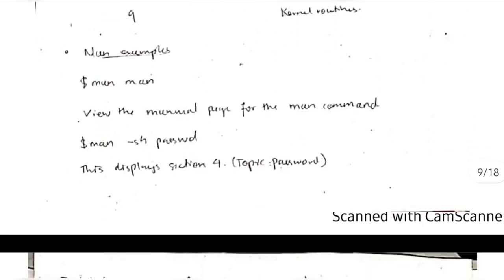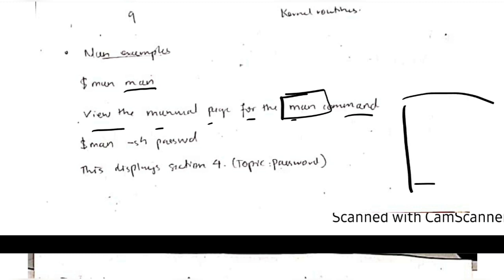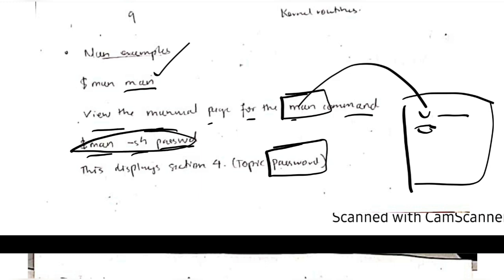For example, if I write 'man man', it will view the manual page for the man command itself — man is also a command, so its definition is present in the manual. 'Man 5 passwd' — that section has a topic 'passwd' that will be displayed if I write this command.